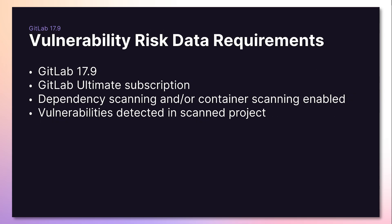In order to see this new vulnerability risk data, GitLab 17.9 is required along with a GitLab Ultimate subscription. This works on either SaaS or on-prem deployments. Dependency scanning and/or container scanning must also be enabled within your project, and finally there must be valid vulnerabilities detected within the default branch of the scanned project.